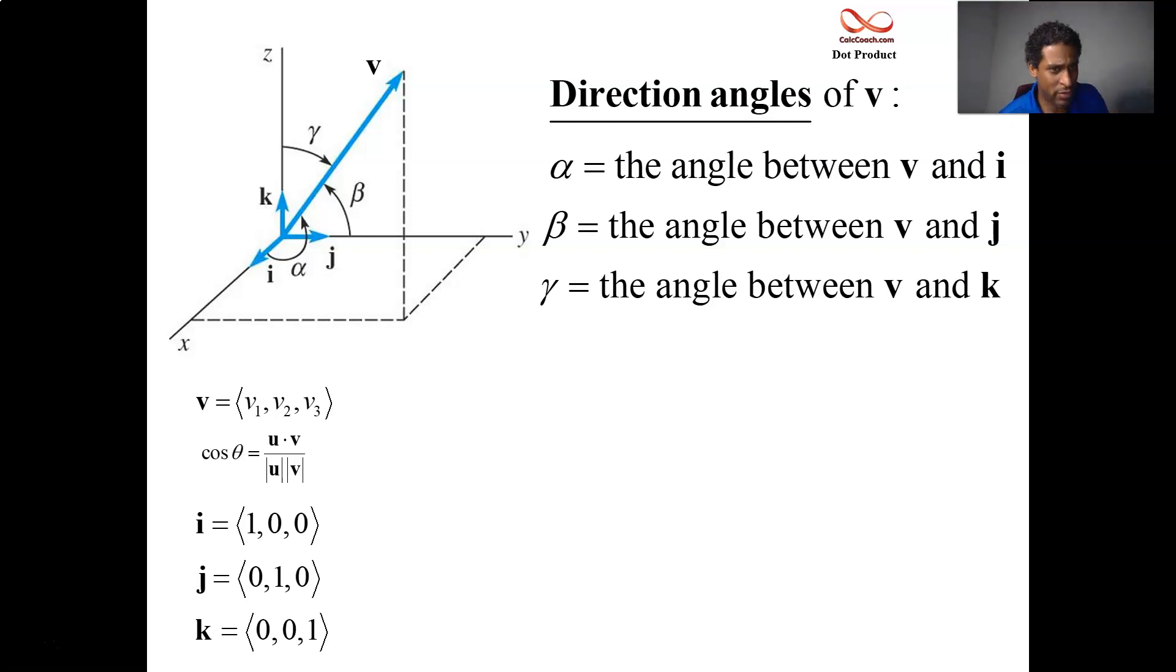When it comes to the dot product that we make with i, two of those zero out and we just get the first component, we get v1. And so the cosine of the angle between v and i is v1 over mag v. The cosine of the angle that you make with j is v2 over mag v, and the cosine that you make with the angle with the vector k is v3 over mag v.